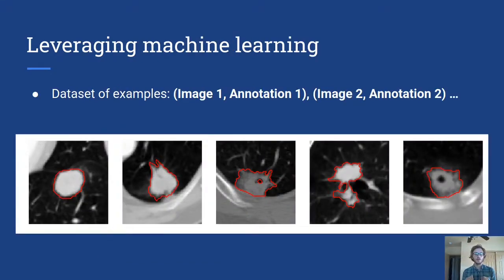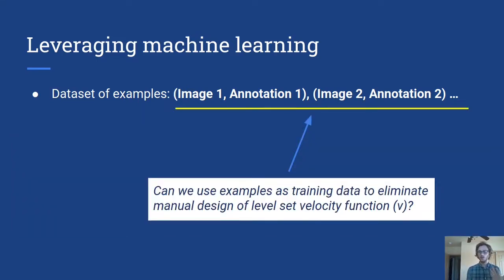So let's suppose that we have some data set of images and annotations of where the boundaries of objects should be in those images. So for example here is a data set of lung CT images and the things being segmented are what are called nodules or lung tumors. So the question is if you have something like this in your hands, a data set like this that has been annotated by experts, could we use this annotated data to eliminate this manual design step, the manual design of this velocity function in the level set segmentation approach?